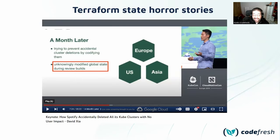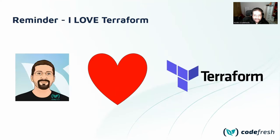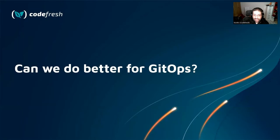Terraform uses Git for storage but not as a source of truth. If you've worked with Terraform in a big company, you would have your own horror story. My favorite one is for Spotify — if you search 'Terraform state Spotify' you'll find the video where somebody explains how they destroyed two thirds of Spotify's production because they misunderstood Terraform state. So that's the end of the Terraform section. Again, I love Terraform, it's a great tool, but it's not GitOps — and there are better solutions.